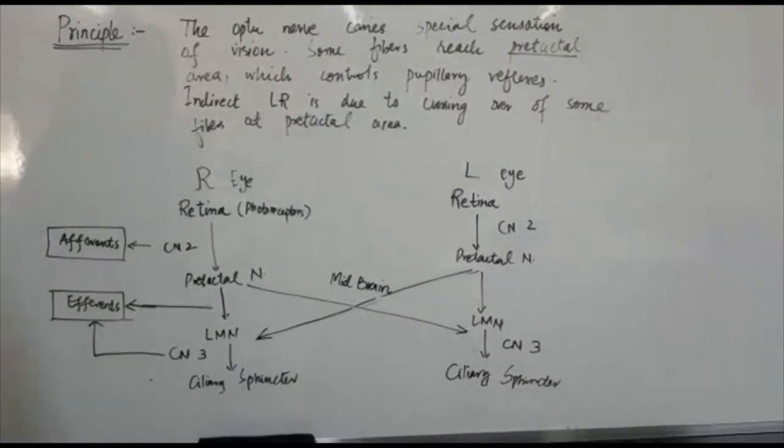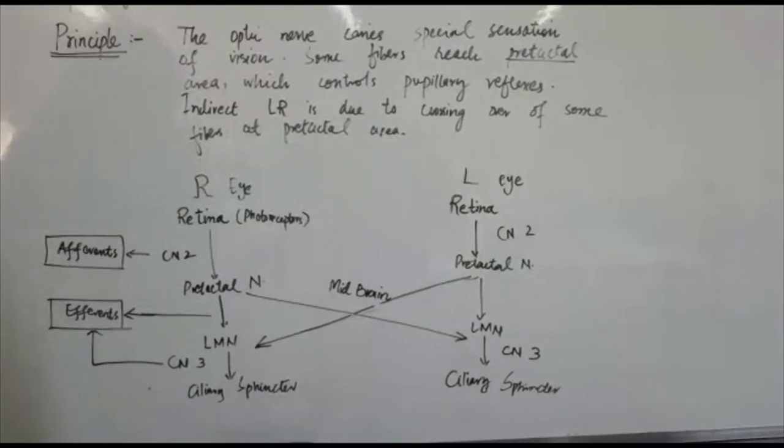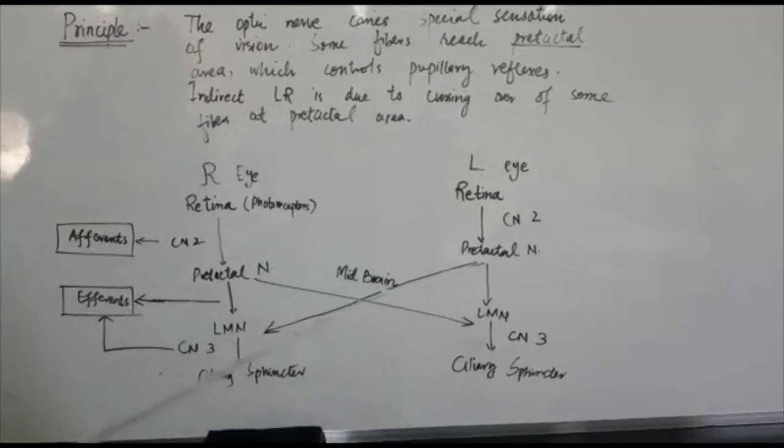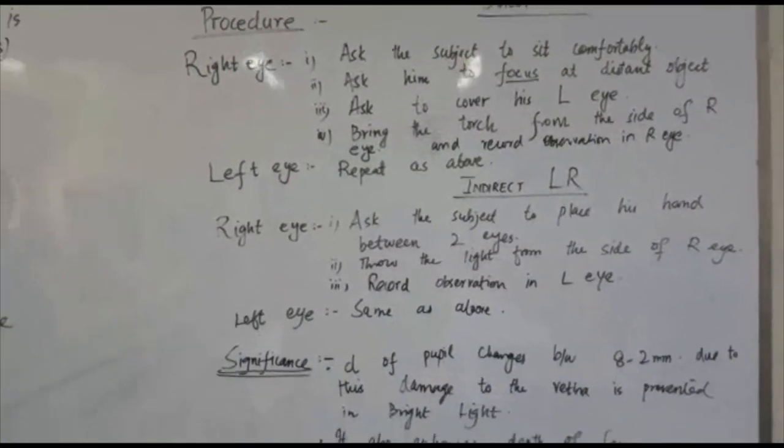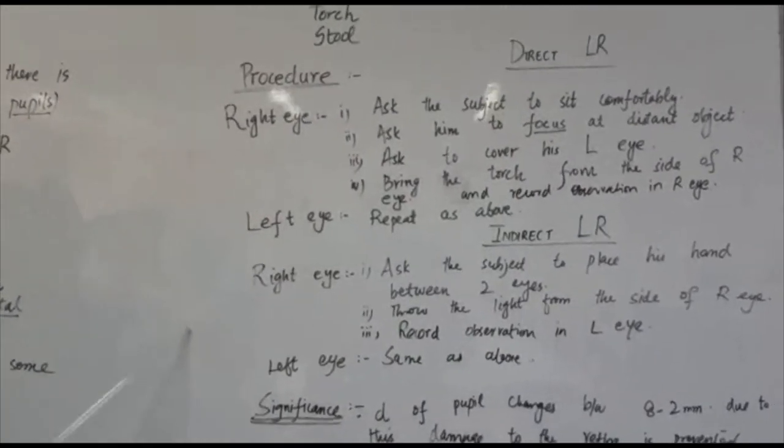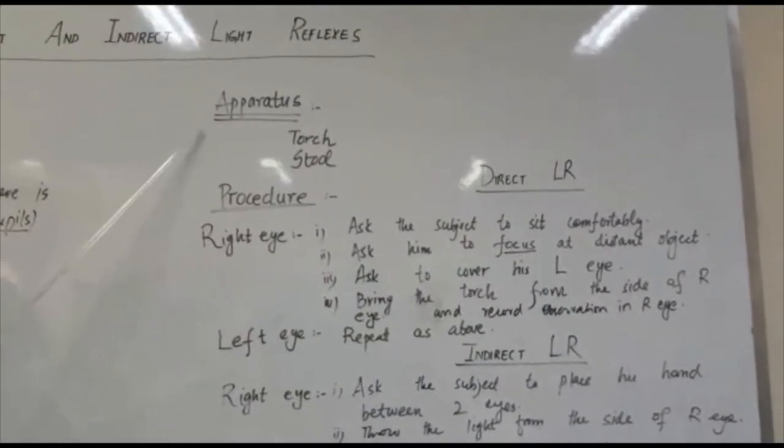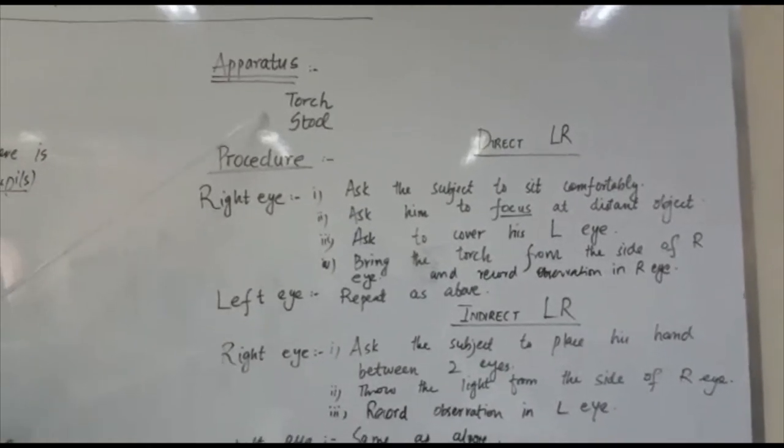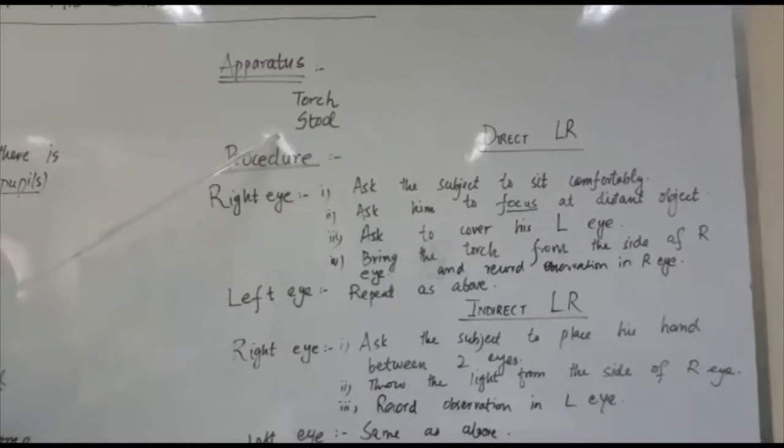Now, after this explanation of principle, let us move to how you will perform the practical. If you have any confusion, you can ask in the comment section. Now, what is the apparatus that we will need for the practical? It is a torch and a comfortable stool.